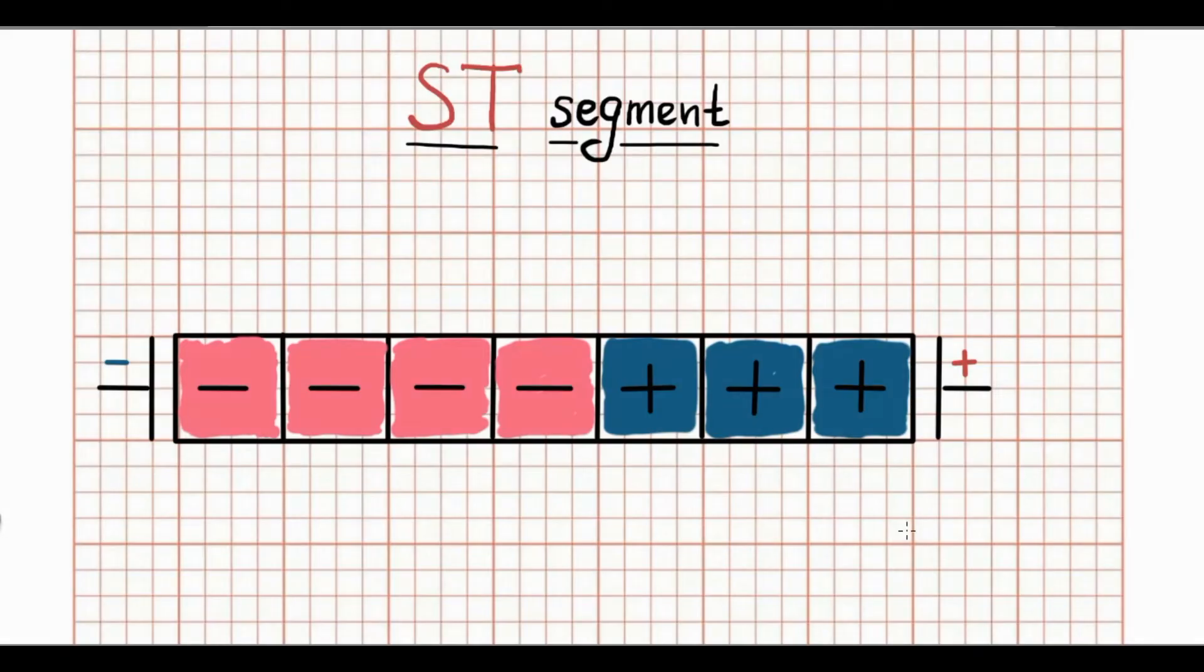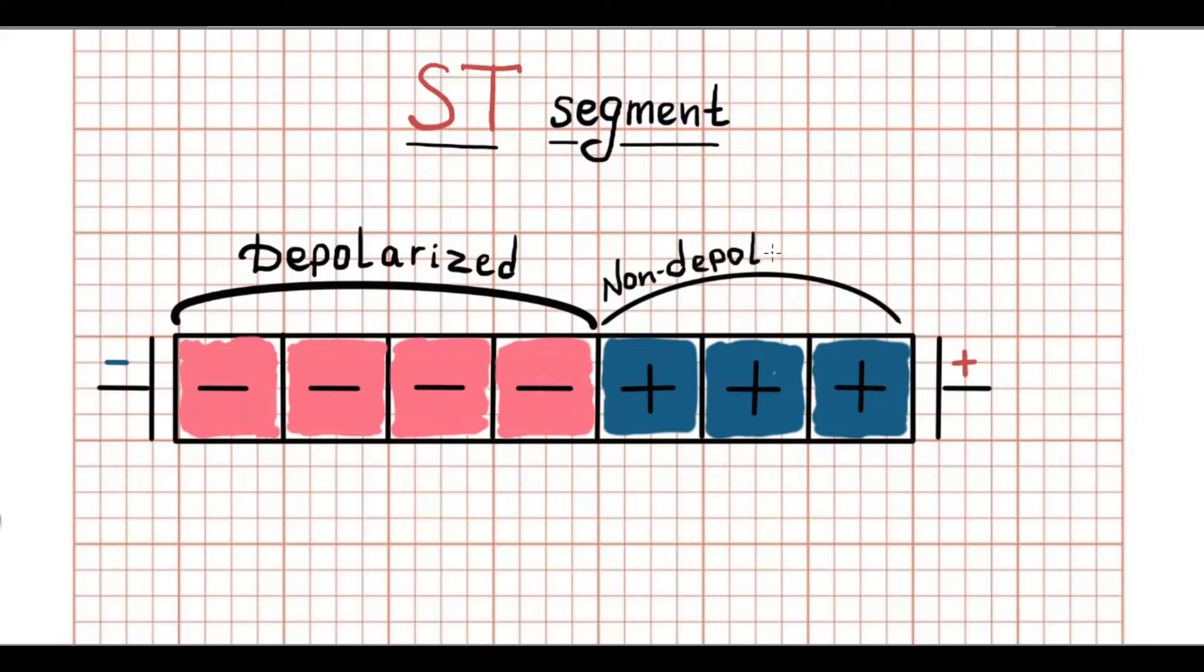These are myocardial cells. If the part of myocardium is depolarized and has a negative charge, so other part is non-depolarized, it means has a positive charge. As a result, difference of potentials arise between these two parts.